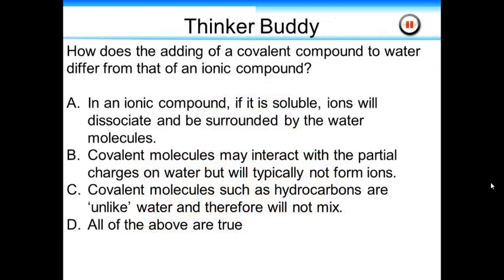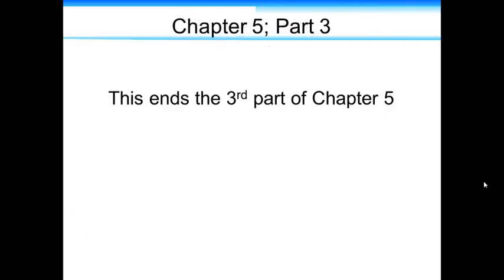ThinkerBuddy: how does adding a covalent compound to water differ from that of an ionic compound? A: In an ionic compound, if it is soluble, ions will dissociate and be surrounded by the water molecules. B: Covalent molecules may interact with the partial charges on water, but will typically not form ions. C: Covalent molecules such as hydrocarbons are unlike water, and therefore will not mix. D: All of the above are true. The correct answer is D — all of the above are true. This ends the third part of Chapter 5.